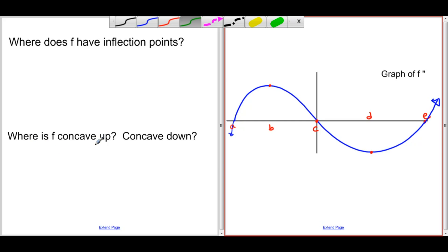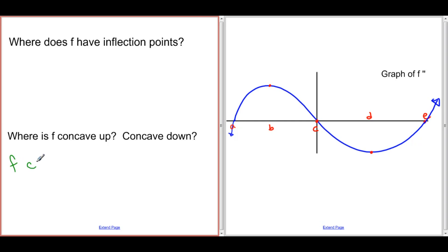Let's start with concavity. f is concave up when f double prime is positive. Now, this is the graph of f double prime. And so the graph of f double prime is positive when it is above the x-axis. So f is concave up on the interval from a to c, because the graph of f double prime is positive.